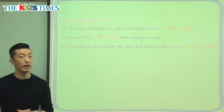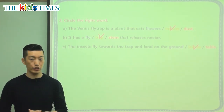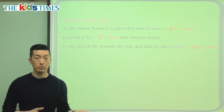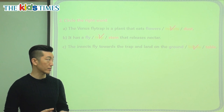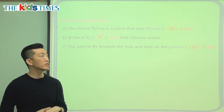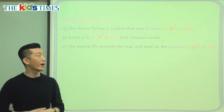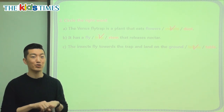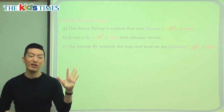Today we learned about a very interesting but scary plant called the Venus flytrap. We learned a new word, carnivorous, meaning it eats other animals — in this case, a plant that eats insects using its trap. If you see one, you can share with your friends and family what it is, and be careful not to put your finger in it because it might try to trap you! I hope you enjoyed today's article and I'll see you again next time. Goodbye, everyone.